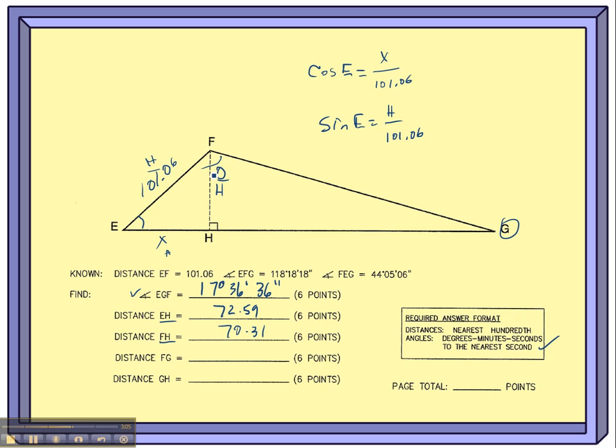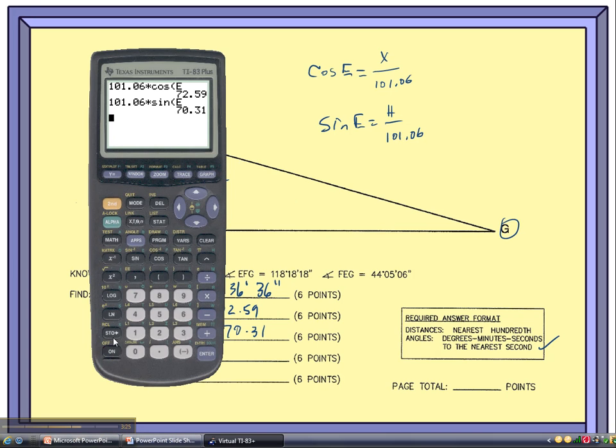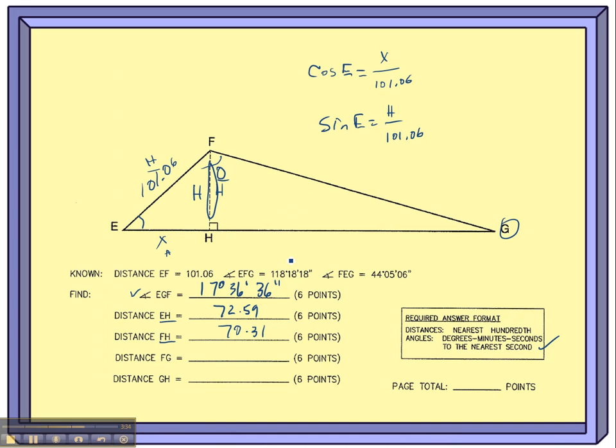70.31. Now this FH, I need this length in order to find the other two lengths. So I want to store that in the calculator. Let's go ahead and store it as H. That's the letter I've been using all along. And instead of writing the number 70.31 down, which would tempt me into using it in a calculation, just write the letter H, and then make sure in your calculator you store that as H. Okay, so in the next video we'll find the last two lengths.